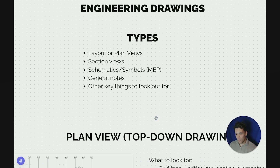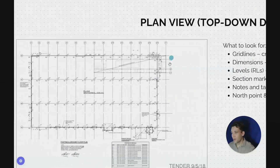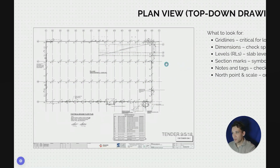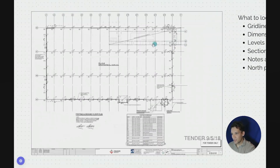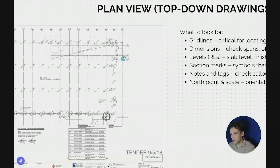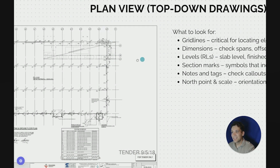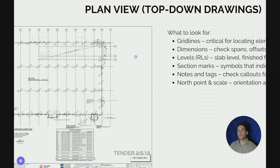First up we've got plan view, which is a top-down drawing — an aerial view of the project. Imagine we're above the project looking down. The first thing we have are grid lines, which are references used throughout the set of drawings. This grid line will be used in elevation views — where we're looking face-on — and section views where we have specific cuts and want to look at something in more detail. These same grid lines can be used when referencing different types of drawings to understand where we're looking in the building project.